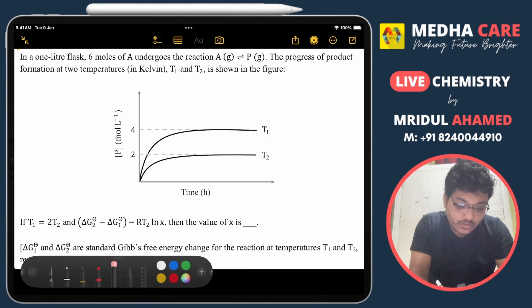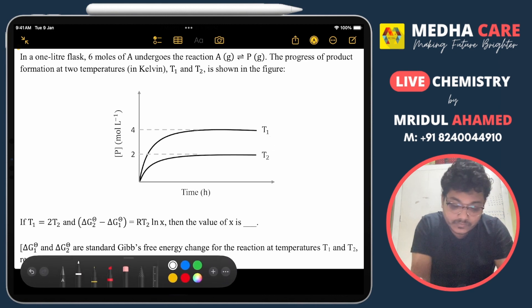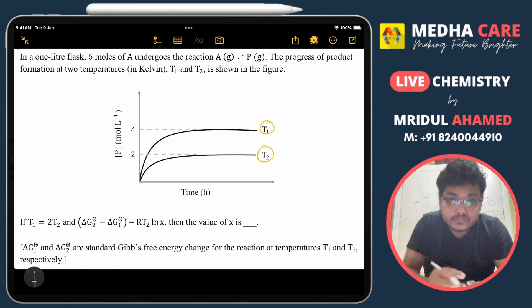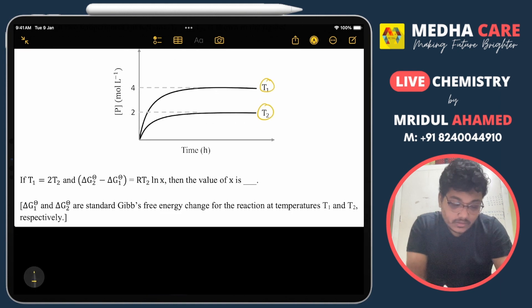The equilibrium conditions are at temperature T1 and temperature T2. It is also given that T1 equals 2T2, and the difference between standard Gibbs free energies at these two temperatures is given. We have to find the value of x.